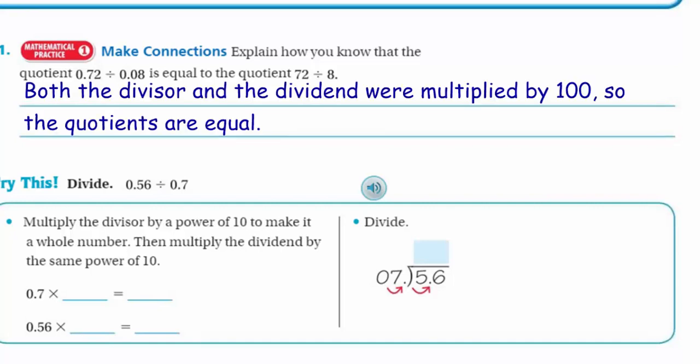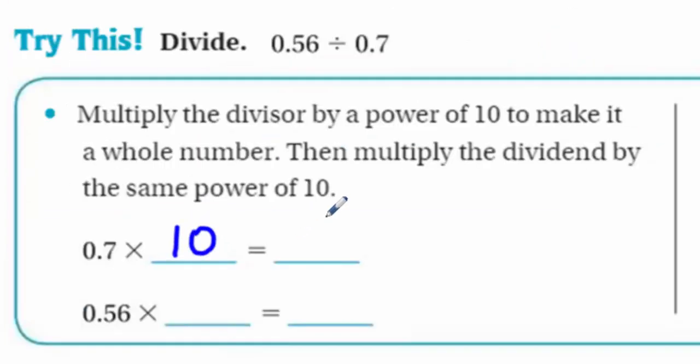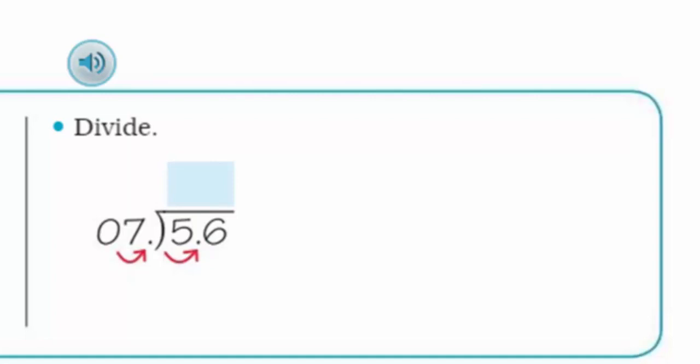Alrighty then. Let's move on down. Let's just try this. Divide 56 hundredths divided by 7 tenths. Now, my first observation right away is I notice that on our last problem, both the divisor and the dividend were both in the hundredths. However, this one, we have the dividend in the hundredths. We have the divisor in the tenths. Multiply the divisor by a power of 10 to make it a whole number. Then multiply the dividend by the same power of 10. So, 7 tenths times 10 equals 7. 56 hundredths times 10 equals 5 and 6 tenths.